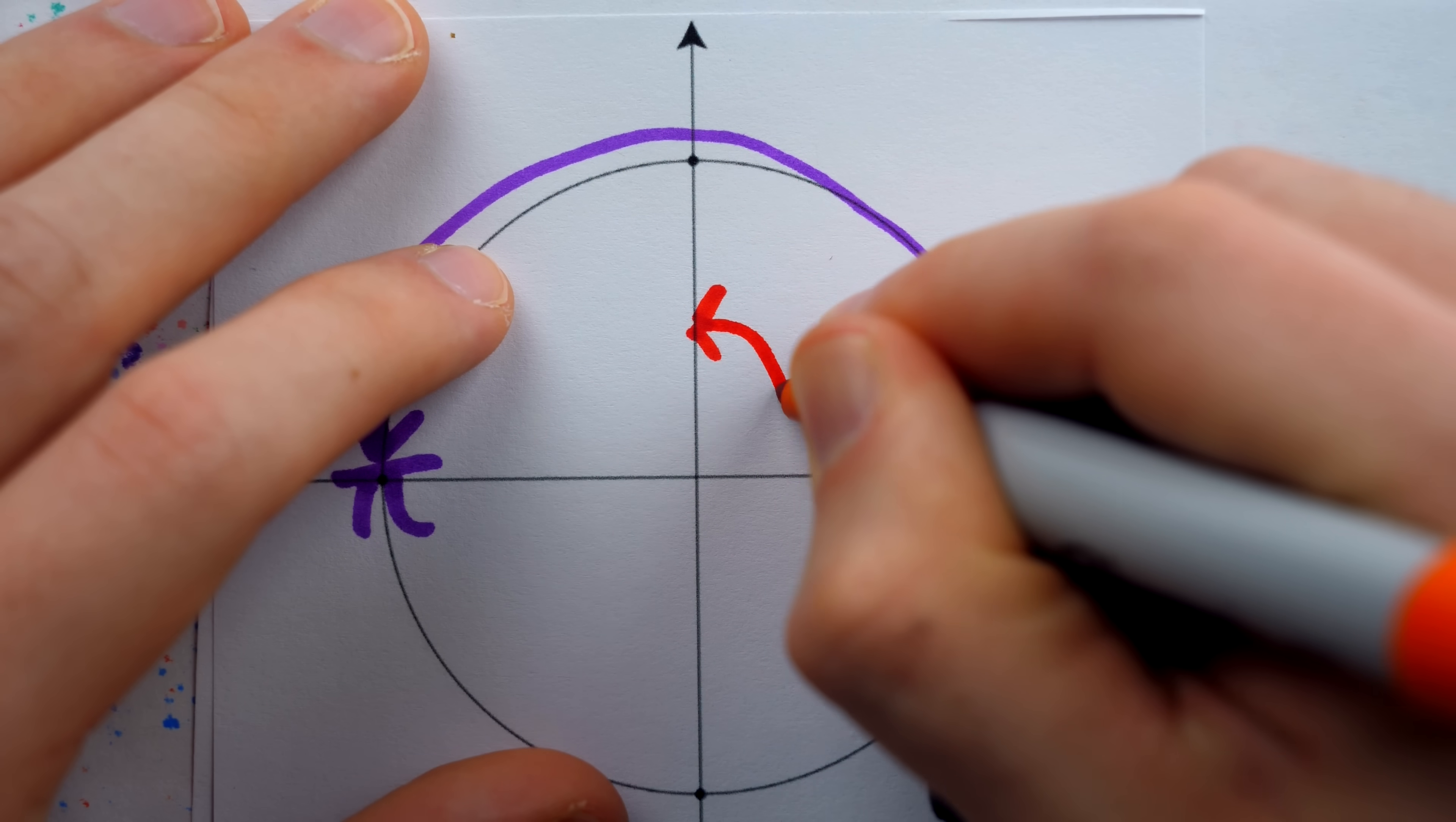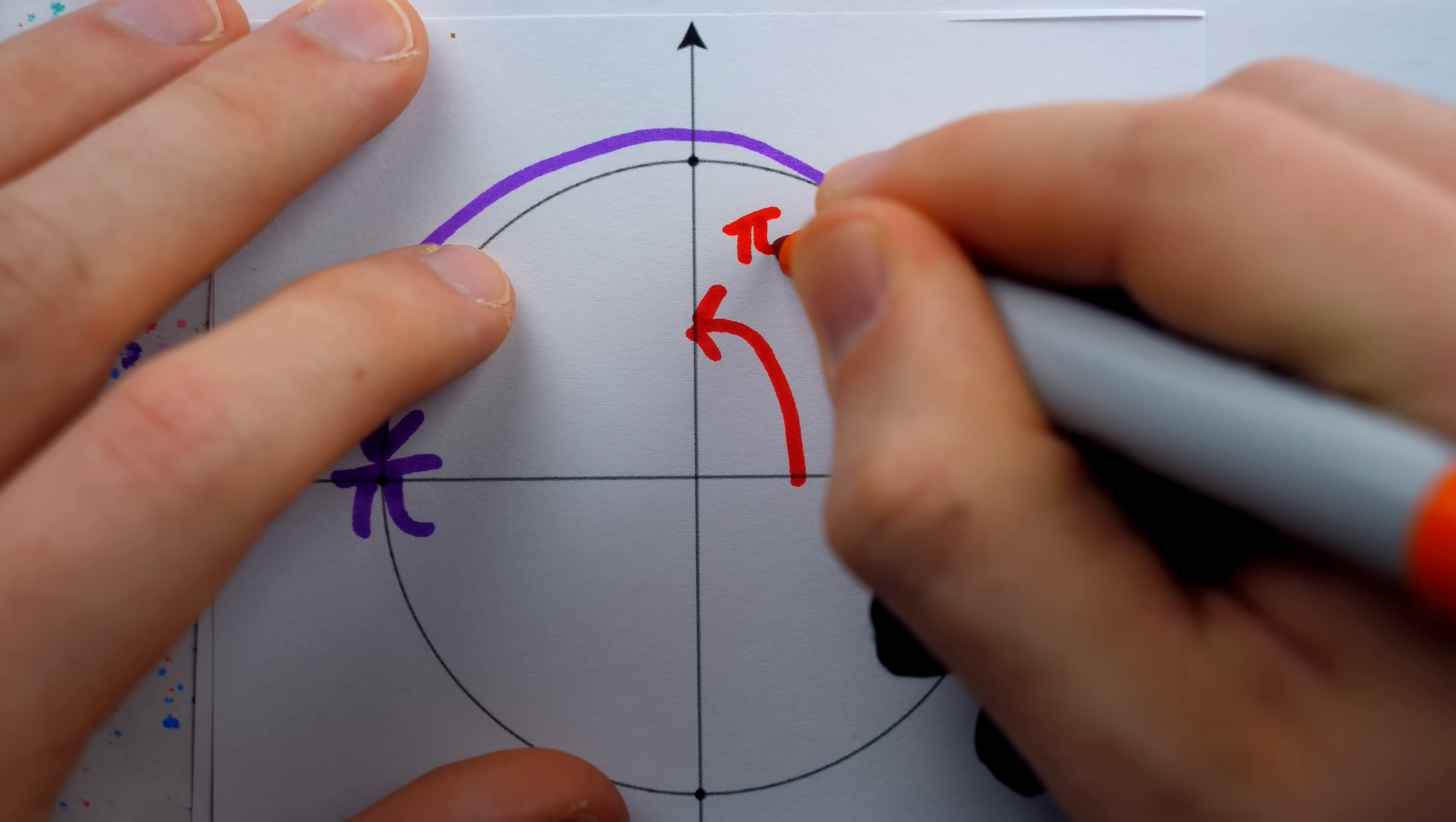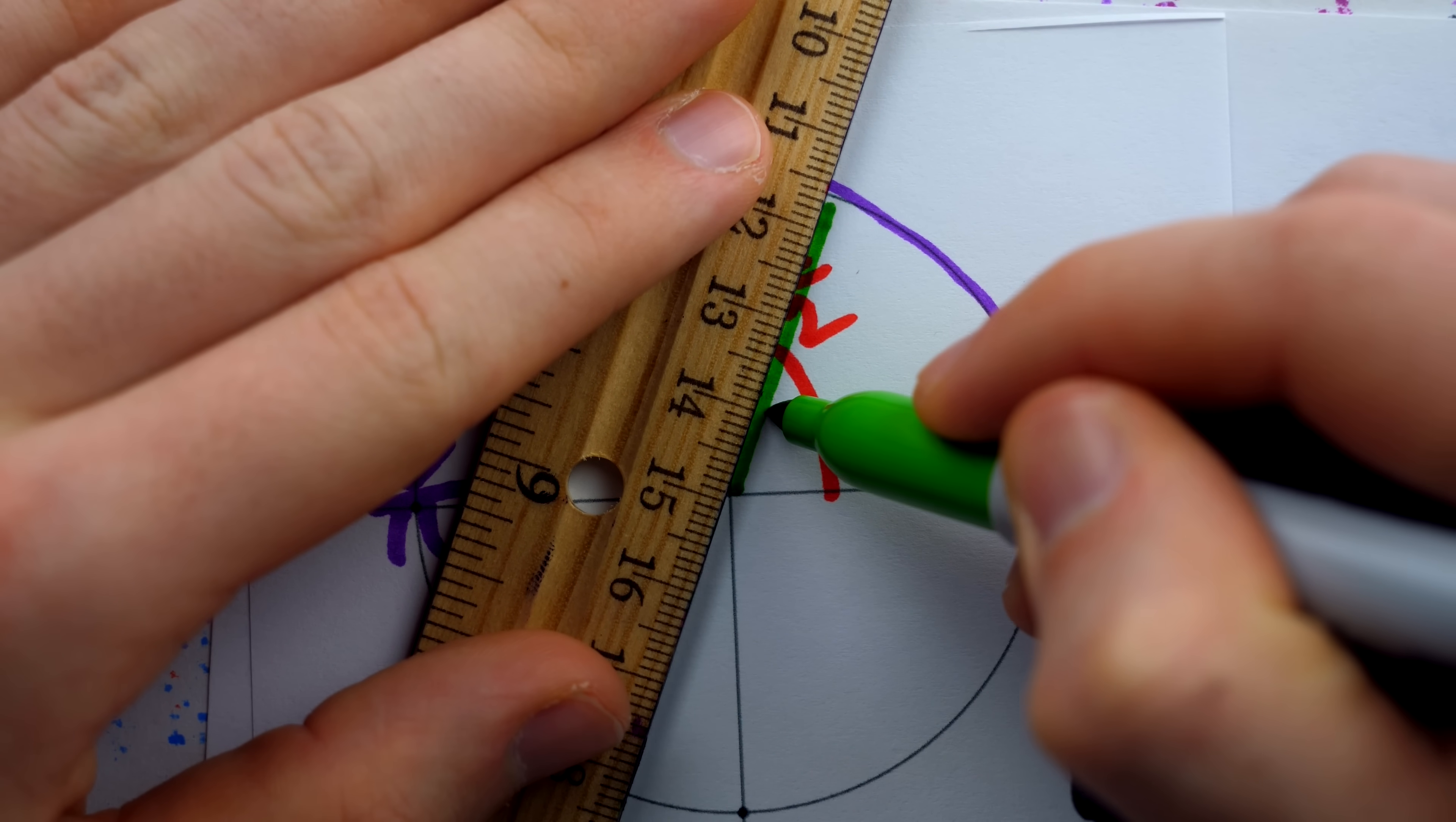Of course, a quarter way around is half of that. So that's pi over two. Pi over three would look something like that. And pi over four would just cut this quadrant in half.